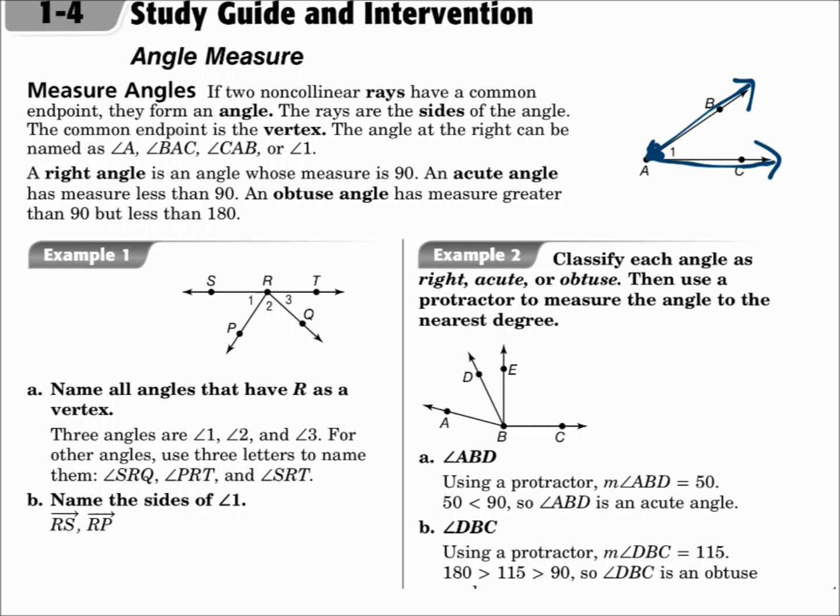This angle can be named angle A, angle BAC, angle CAB, or angle 1. Notice when three letters are used, the vertex is the middle letter.